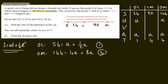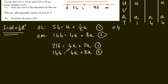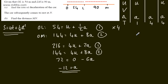We've got simultaneous equations and we can solve for A or U. I'm going to multiply equation 1 by 4: 216 equals 4U plus 2A. Equation 2 remains 144 equals 4U plus 8A. Remember we're expecting a negative value of A as the car is decelerating. Subtracting downwards gives 72 equals negative 6A, so dividing both sides by negative 6, A equals negative 12 metres per second squared. Therefore the deceleration is positive 12 metres per second squared, and that answers part A.